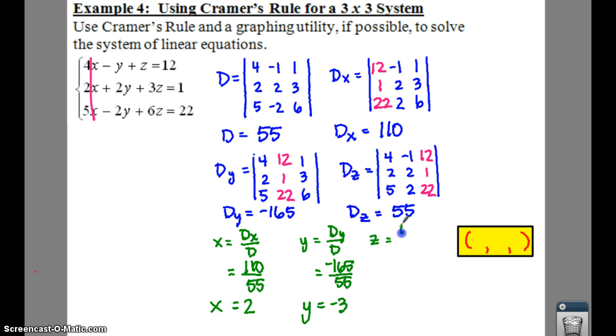And z, as you might have guessed, is D sub z over D. So, that gives you 55 divided by 55, which gives you z equals 1.